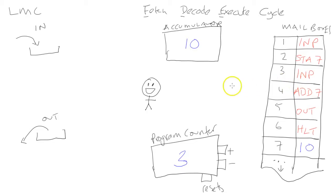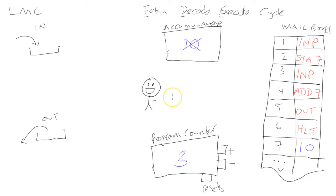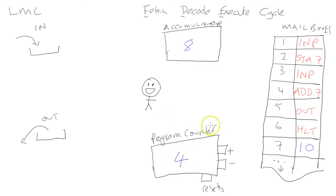He walks over to position three, fetches the instruction which is input, decodes it as an input command, and executes it. He walks to the in tray where there is another number waiting — the number eight. He takes that eight from the input tray and takes it over to the accumulator, where whatever was in the accumulator is removed and replaced with eight. He then increments the program counter to four.